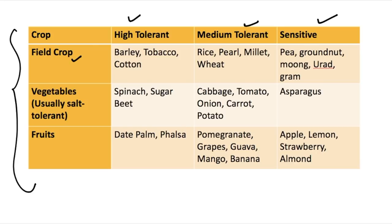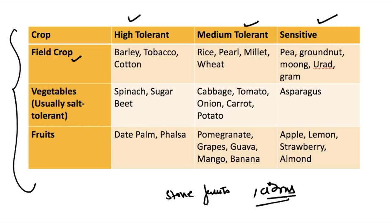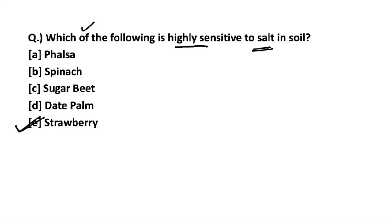Usually, vegetables are not sensitive to salt in the soil, so they are generally salt tolerant. If we need to categorize them, medium-tolerant vegetables include cabbage, tomato, onion, carrot, and potato, while high-tolerant ones include spinach and sugar beet. For fruits, citrus fruits are sensitive to salt in the soil, and strawberry is the most highly sensitive fruit according to this table.